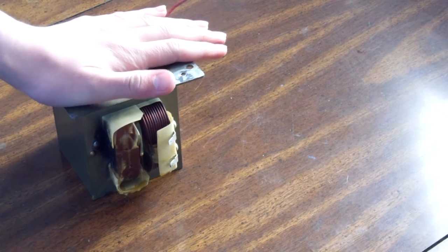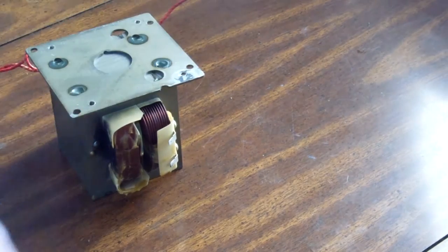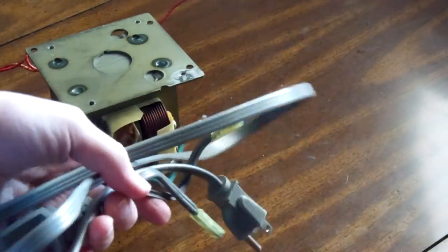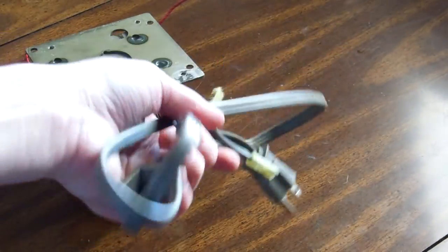The parts you'll need for this project are a microwave oven transformer. You can get this out of an old microwave. You'll also need a three-prong power cord like this one. This one came out of the microwave, so simple enough.